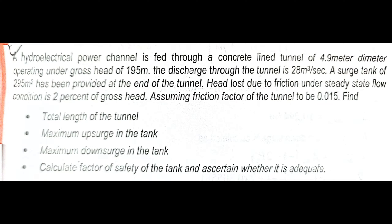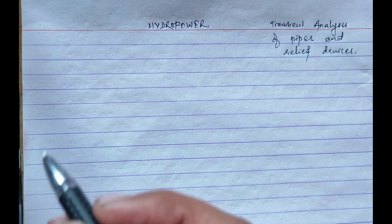A surge tank of 295 meter square has been provided at the end of the tunnel. Head loss due to friction under steady state flow condition is 2 percent of gross head. Assuming friction factor of the tunnel to be 0.015, find: total length of the tunnel, maximum upsurge in the tank, maximum downsurge in the tank, and calculate factor of safety of the tank and ascertain whether it is adequate. So let's start solving this.